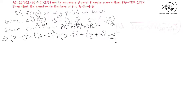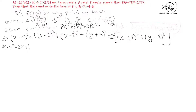PC² with C(-2, 3): PC² = (x - (-2))² + (y - 3)² = (x + 2)² + (y - 3)². Now expanding PA²: (x - 1)² = x² - 2x + 1, and (y - 2)² = y² - 4y + 4. Expanding PB²: (x - 2)² = x² - 4x + 4, and (y + 3)² = y² + 6y + 9.